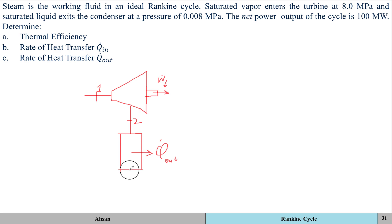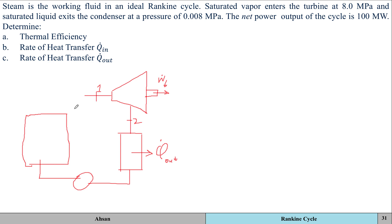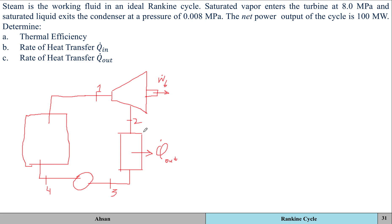The third component is a pump, which is connected to a boiler or steam generator. State three is at the pump inlet and state four is at the boiler inlet, completing the schematic.